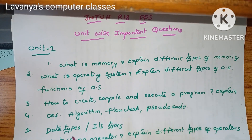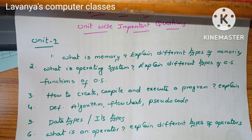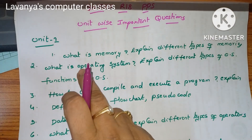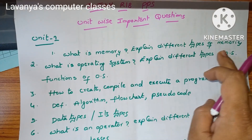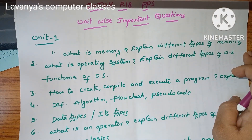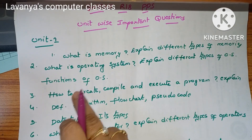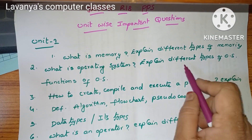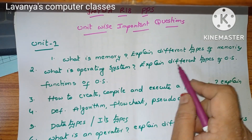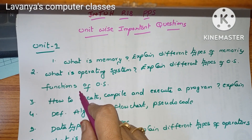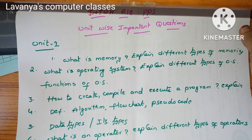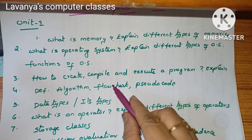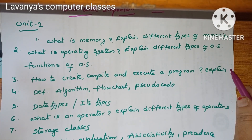In unit 1, the first part is about computers — introduction to computers and everything. The first question is: what is memory? Explain different types of memories. Second question: what is an operating system? Explain different types of operating systems, and also functions of operating systems. Third question: how to create, compile, and execute a program?